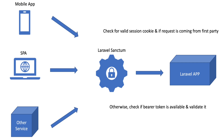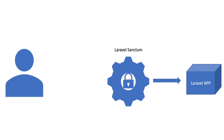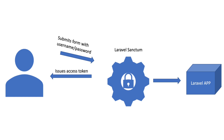For example, to authenticate a mobile app, the user needs to enter their username and password and submit the form. Laravel will validate the username and password, create a new access token, and send it back in the response. Your mobile app then needs to store this token and pass it on further requests via the authorization header as a bearer token. Because the request is not coming from your first-party SPA, Laravel Sanctum checks the bearer token and authorizes it if the token is valid.